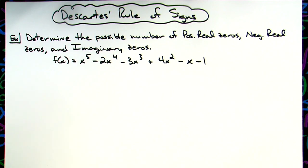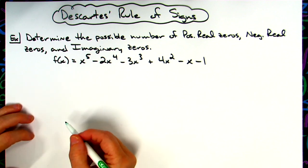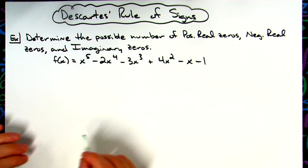In this video we're going to take a look at Descartes' Rule of Signs. We're going to work through one example showing how we can find the possible number of positive real zeros, negative real zeros, and imaginary zeros.